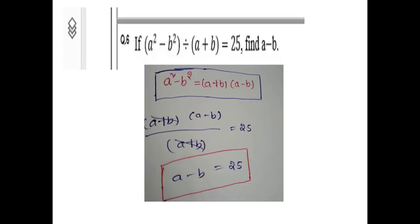First question: if a² minus b² divided by a plus b equals 25, find a minus b. So, a² minus b² divided by a plus b equals a minus b. This is a very important formula. The A²-B² formula is (a+b)(a-b). So if we substitute the formula: (a+b)(a-b) divided by (a+b), then a+b cancels, and a minus b equals 25.